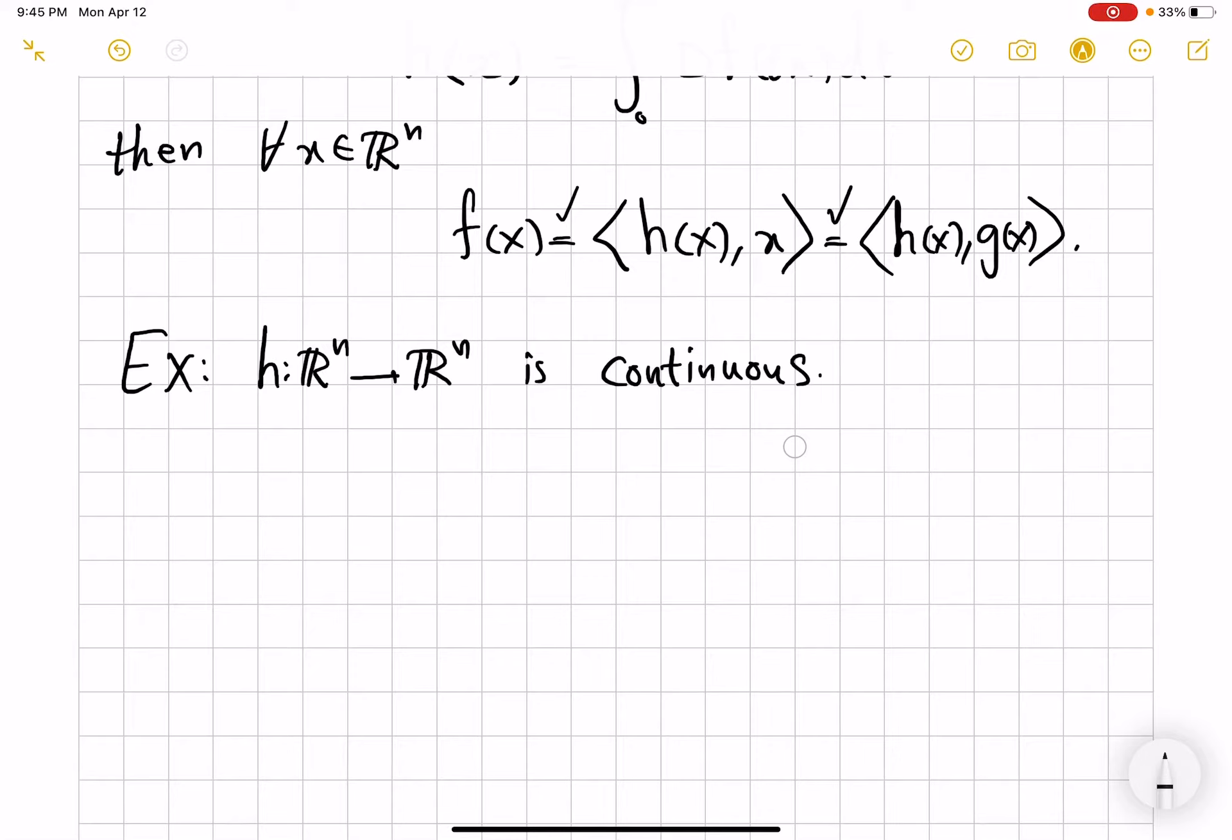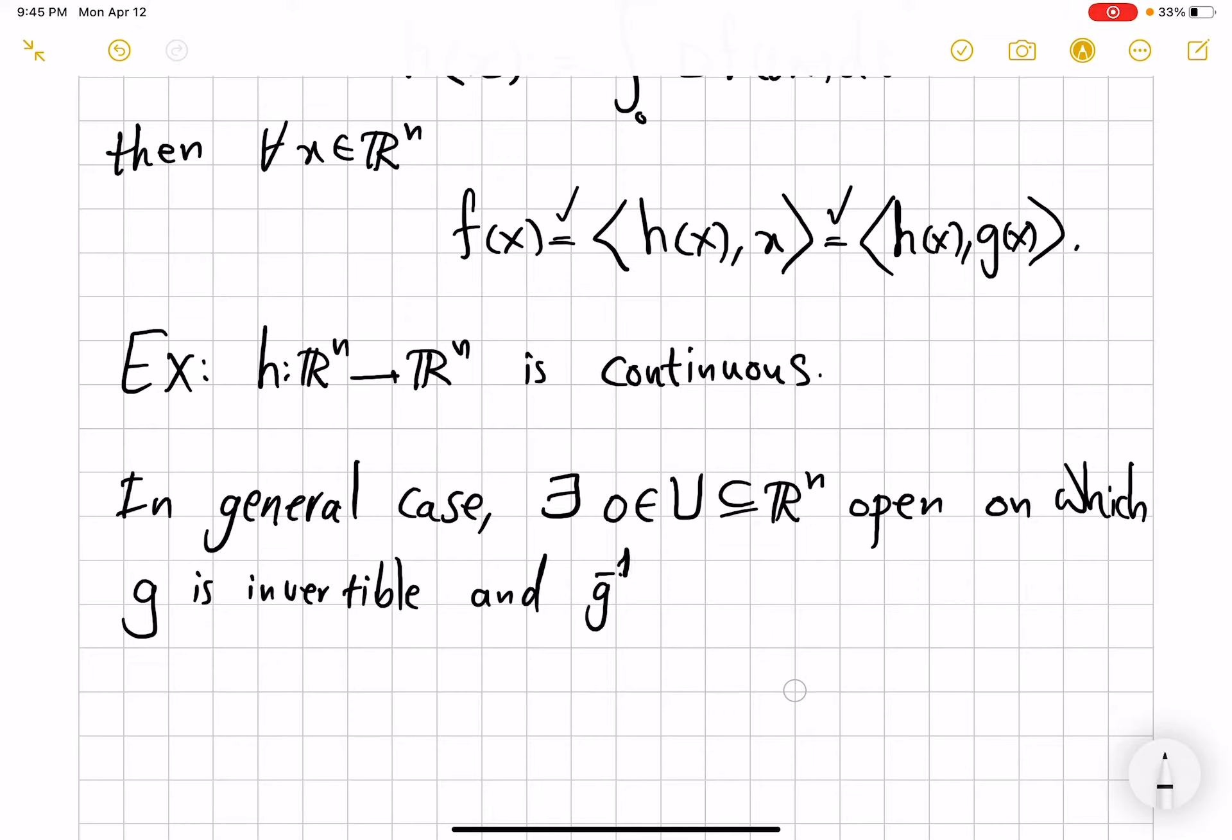So to be precise, in general case, there exists this open neighborhood of 0 on which g is invertible, g itself, not just its derivative, and g inverse is C¹. Now, that's the very statement of the inverse function theorem.